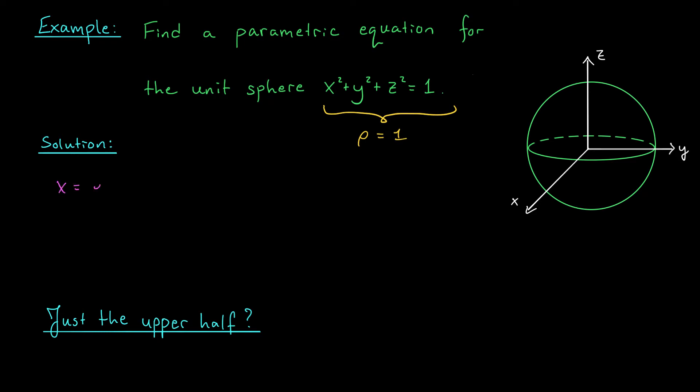X is given by ρ sine φ cos θ. And in this case, since ρ is 1, we can write it more simply as sine φ cos θ. Y is given by ρ sine φ sine θ. And again, we replace ρ with 1 to get sine φ sine θ. Finally, Z is ρ cos φ. Since ρ is 1, Z is cos φ.